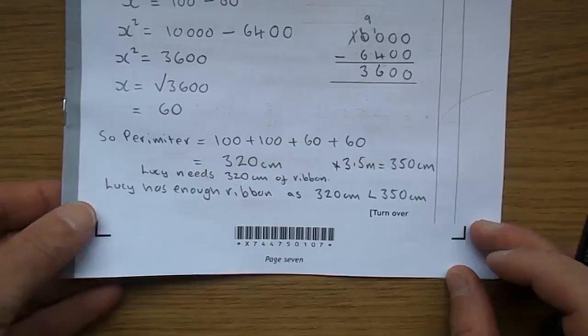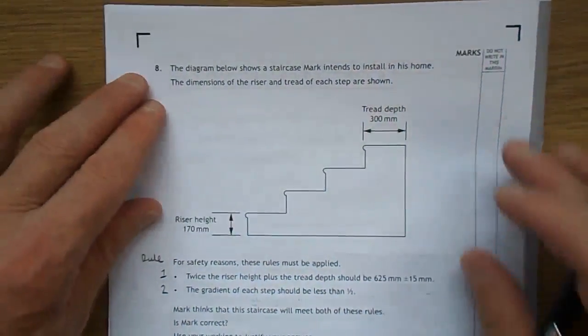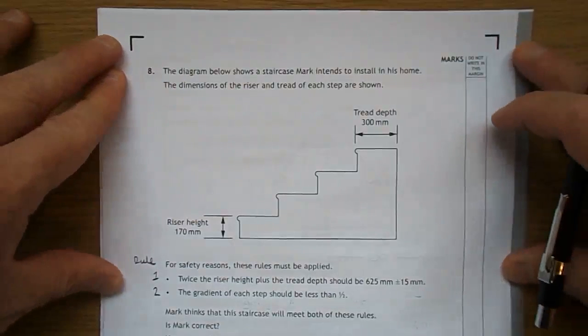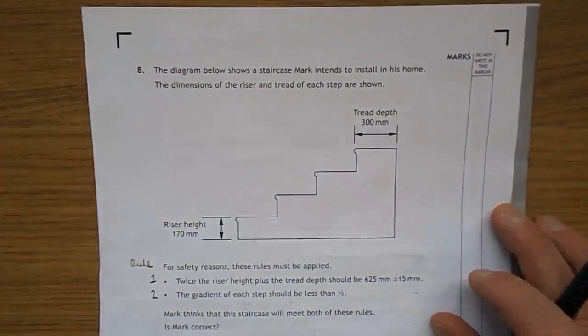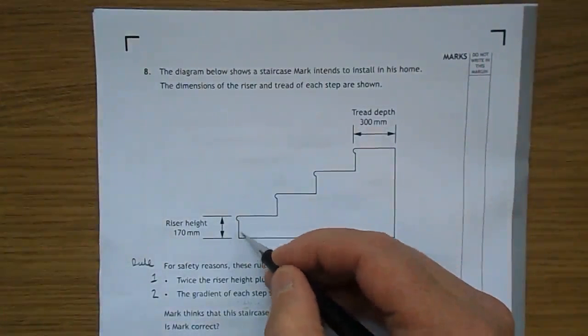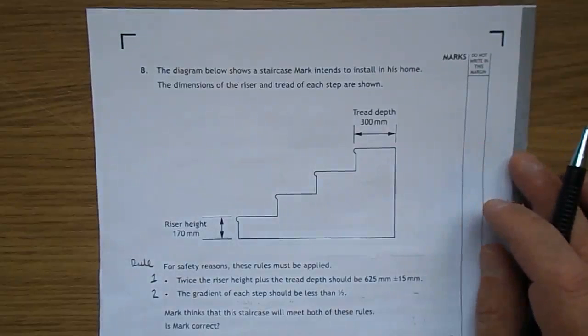Let's look at number 8. The diagram below shows a staircase marking tends to install in this hole. The dimensions of the riser, that's the height of the step, and the tread of each step are shown.